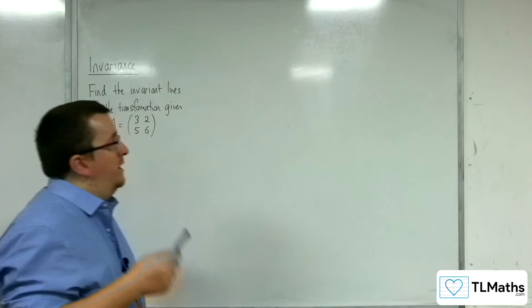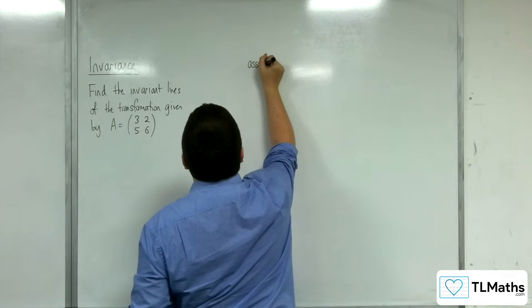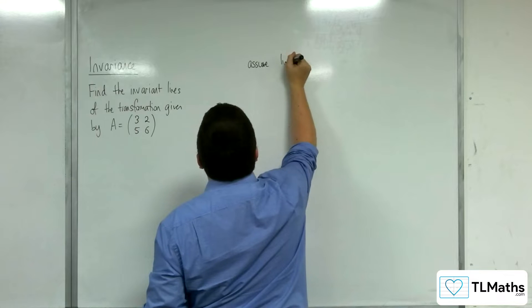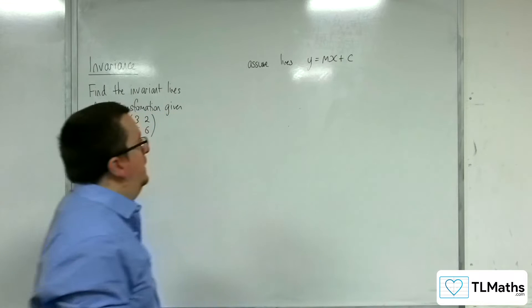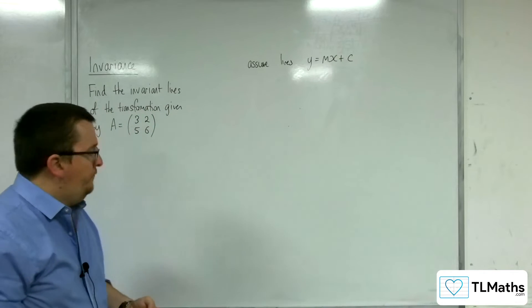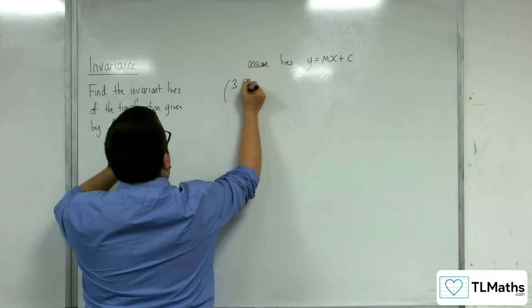So the first thing that we're going to do is we're going to assume that the lines are of the form y equals mx plus c. Now the idea here is that when I apply 3, 2,